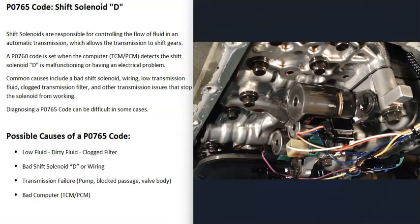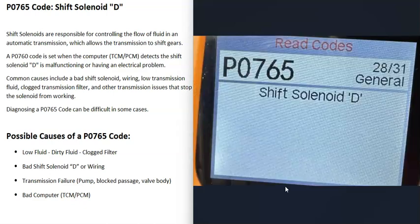This code will need to be troubleshot to find out why. One thing to note about the P0765 code is that it can sometimes be hard to diagnose and fix, because all these solenoids can be located up inside the transmission. To get to them usually requires draining the fluid, dropping the pan, and things like that. So keep in mind that diagnosing a P0765 code can be kind of difficult.